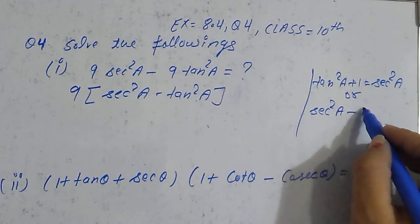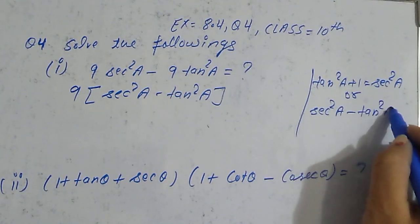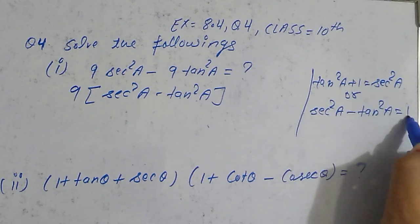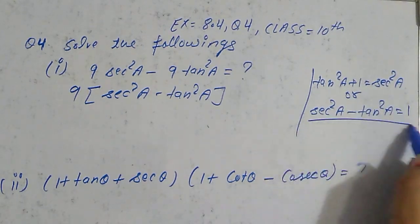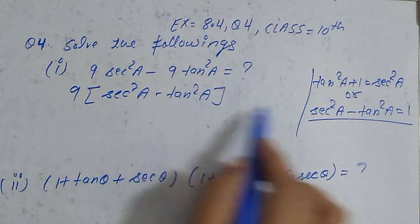Then tan²A goes to the left side, so it becomes minus. Like this equals 1. Okay, so you can write it like this. This is the value of sec²A minus tan²A, right?